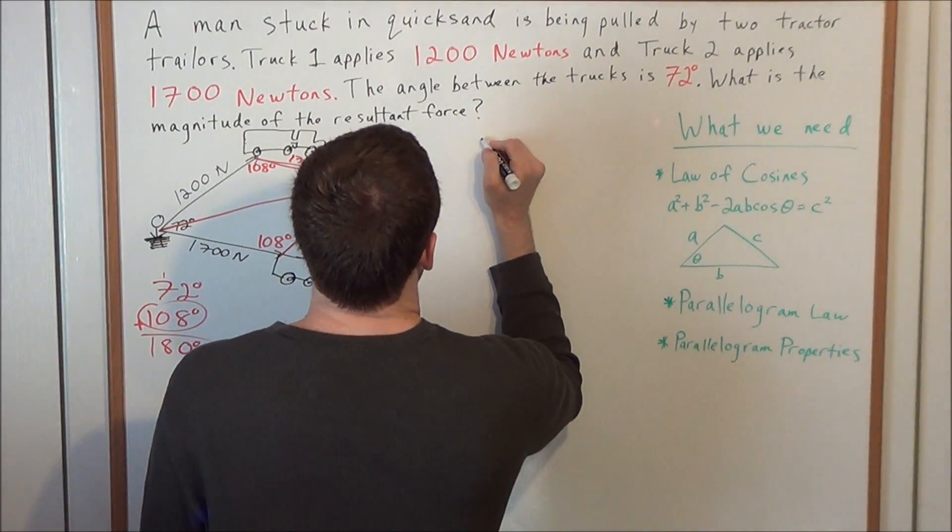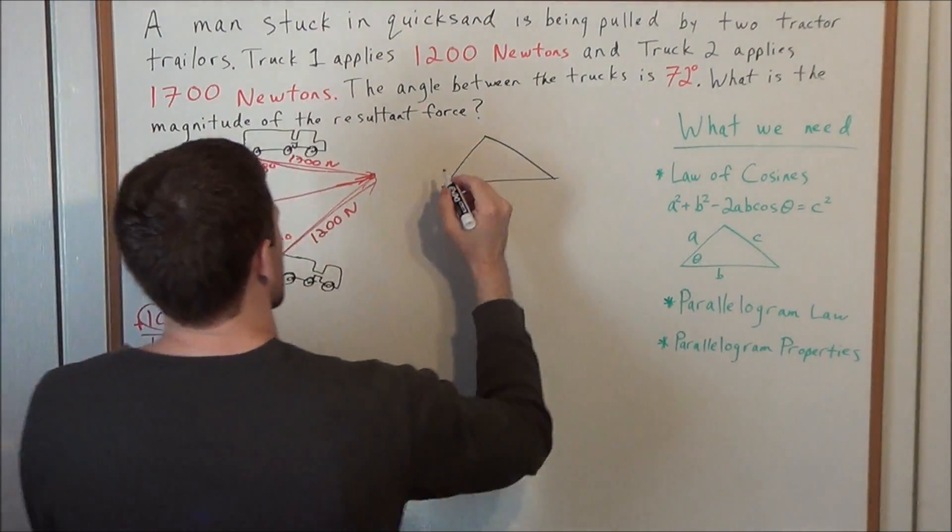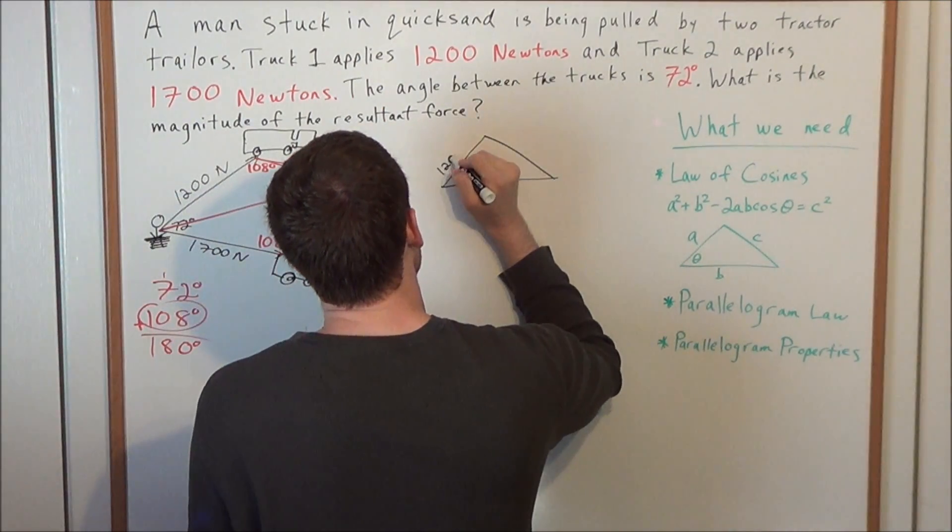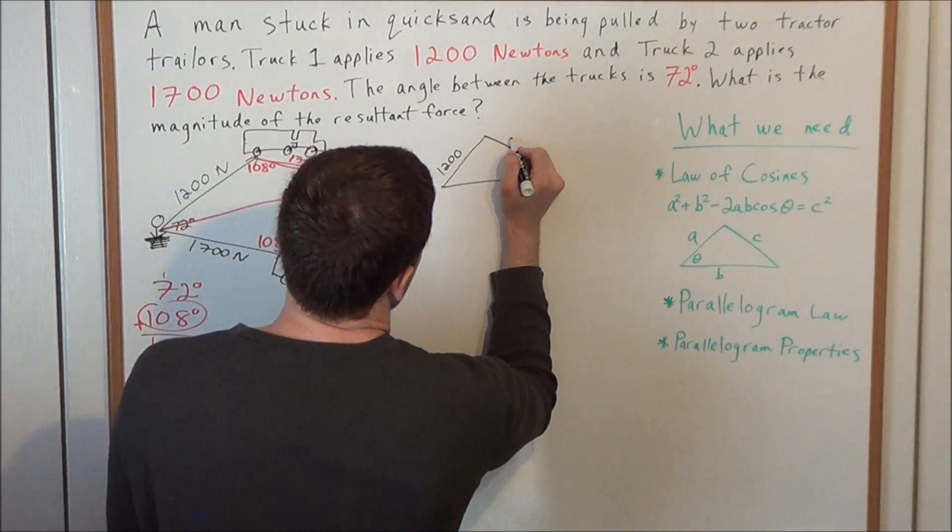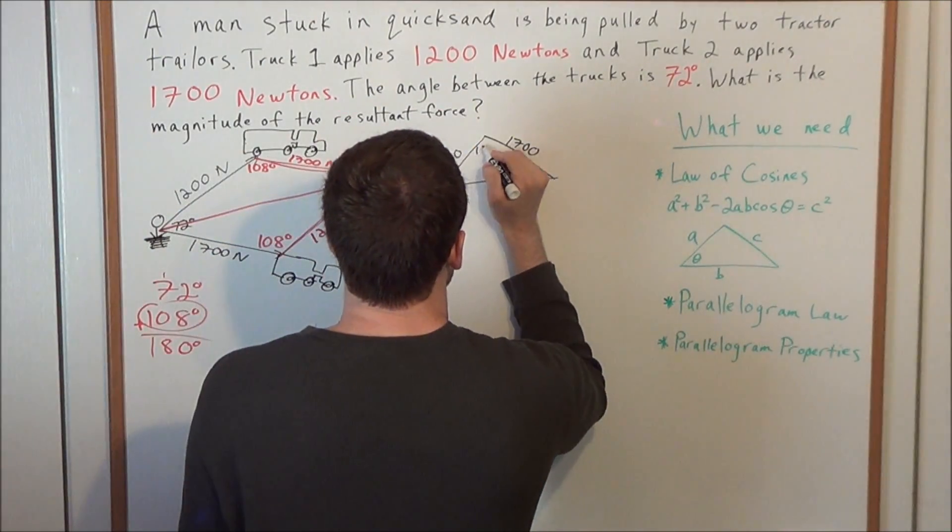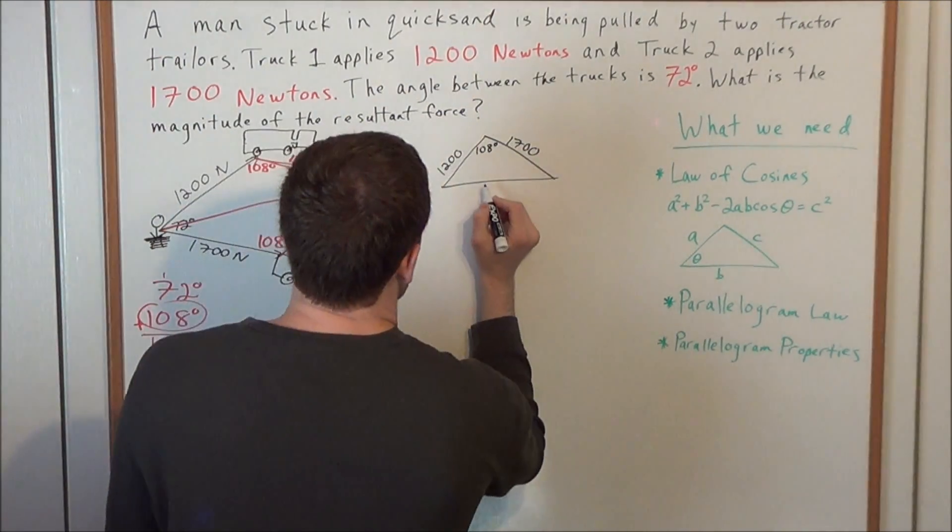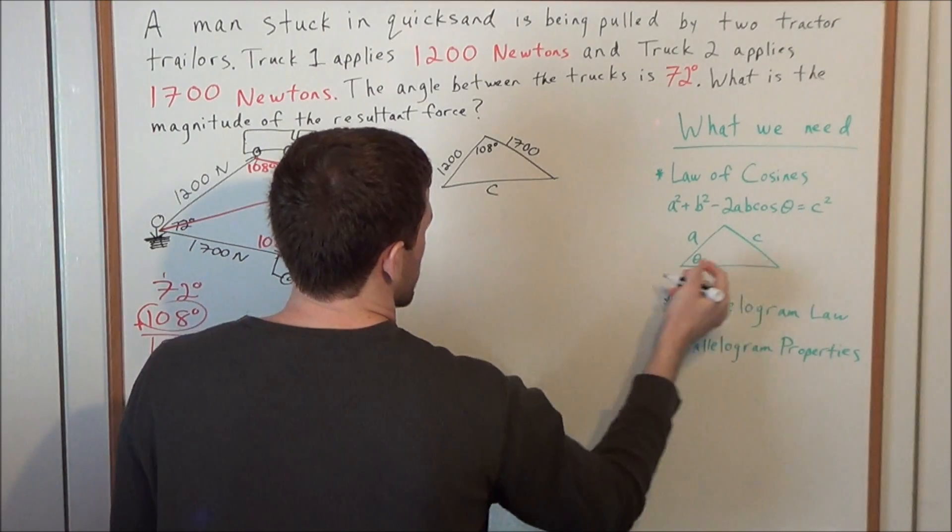We're looking at some triangle here with side lengths 1200, 1700, and an angle of 108 degrees. And we're trying to find the resultant force, which is this missing side, C.